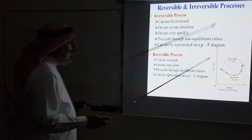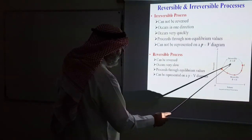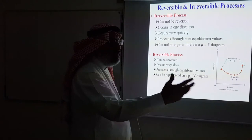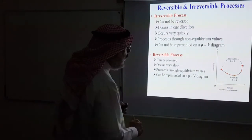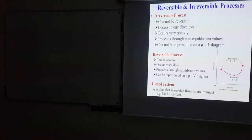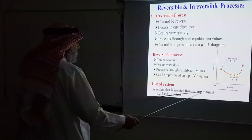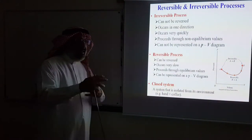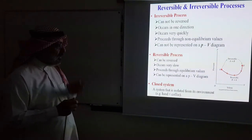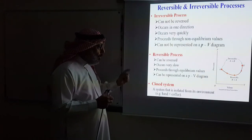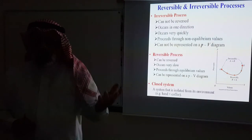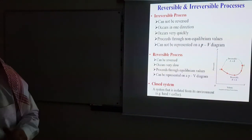Because a reversible process proceeds through equilibrium values, it can be represented on a PV diagram. An irreversible process occurs too fast — we don't know how it proceeds. A closed system is one isolated from its environment, so all exchanges of heat take place within the system. For example, the hand plus coffee form a closed system.